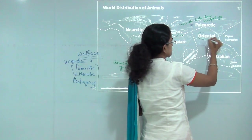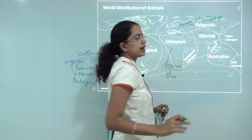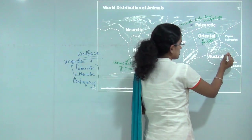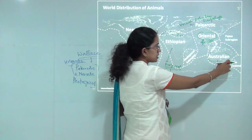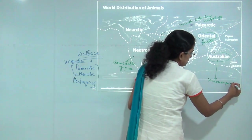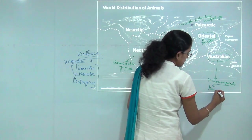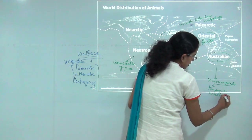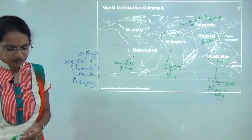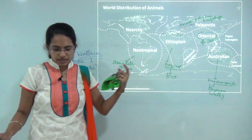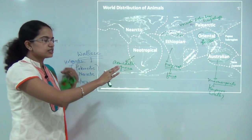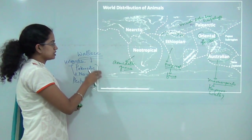There is a transition zone between the Palearctic and Ethiopian regions known as the Saharan region, which has a Mediterranean type of climate. The Oriental region, covering most of India and parts of China, is known for gorillas and chimpanzees. The Australian region, including Australia, Tasmania, and parts of New Zealand, is known for marsupials such as the kangaroo and wallaby.